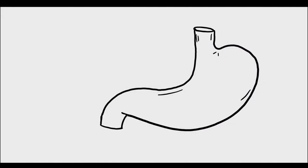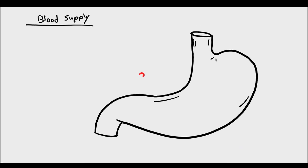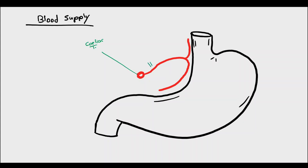Now we will move to the blood supply of the stomach. The stomach has a very rich blood supply, with 5 to 6 named arteries and many more collaterals. As any part of the foregut, the stomach takes its blood supply from the celiac trunk, which is the first unpaired branch of the aorta. Directly from the celiac trunk arises the left gastric artery, which passes medially in the lesser omentum and gives off ascending oesophageal branches and descending gastric branches along the lesser curvature of the stomach.